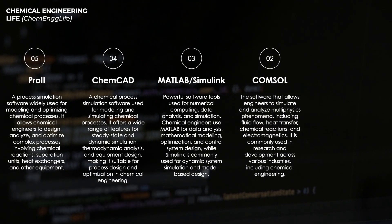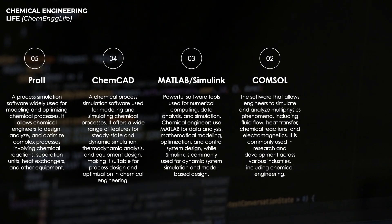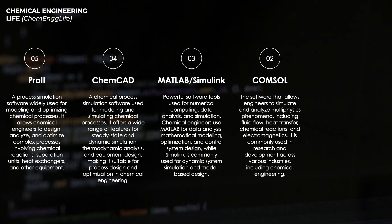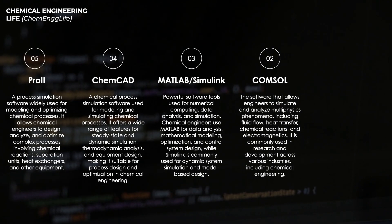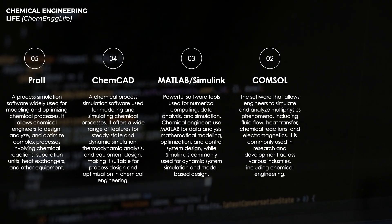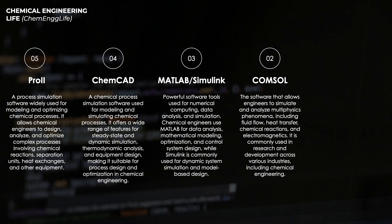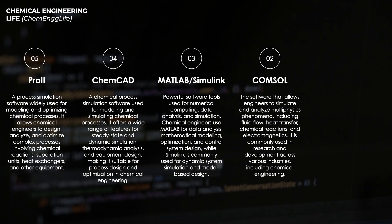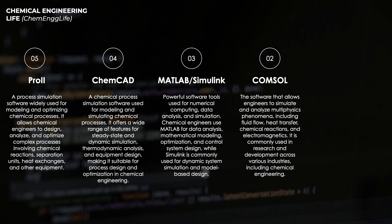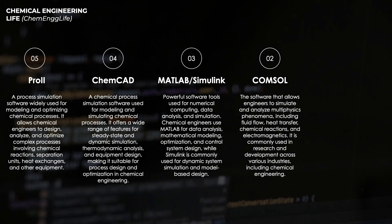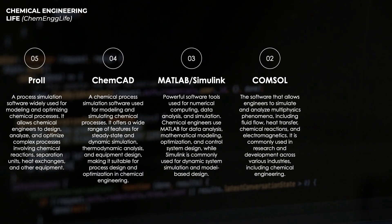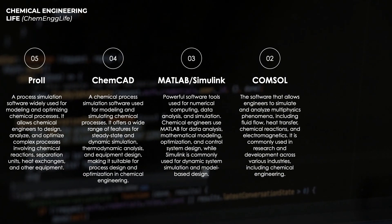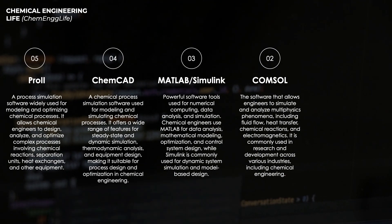The software that we have at number two is COMSOL, which is a comprehensive analysis software package utilized for modeling and simulating multi-physics phenomena. With COMSOL, chemical engineers can create detailed simulations of complex systems involving fluid flow, heat transfer, chemical reactions, and electromagnetics. Its intuitive interface and extensive library of predefined physics modules allow engineers to build customized models tailored to their specific application. The importance of COMSOL for chemical engineers lies in its capability to provide a unified platform for studying physics phenomena, enabling detailed analysis and optimization of chemical operations.